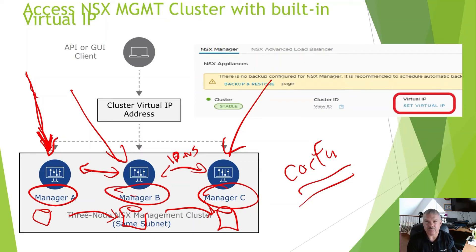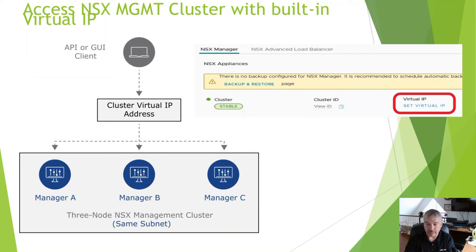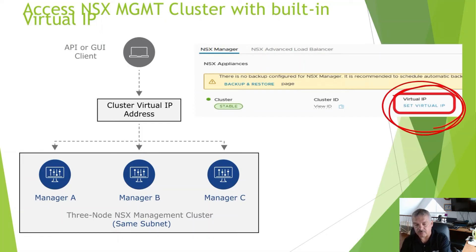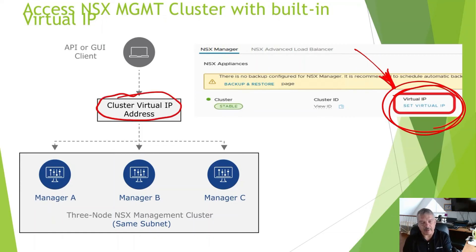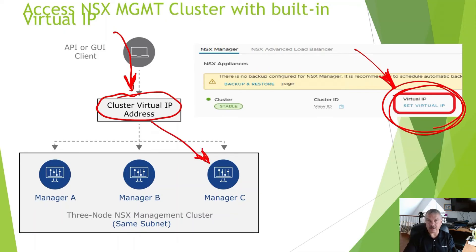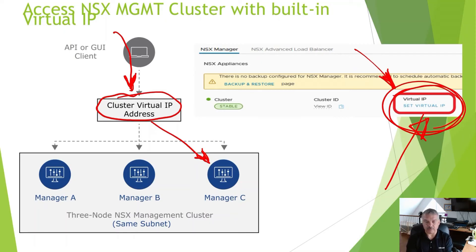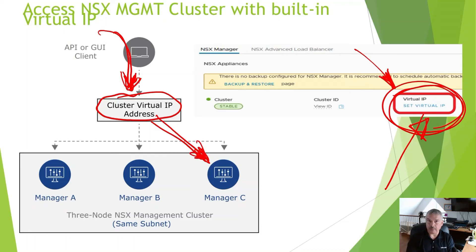That doesn't really help with scripts and API calls though. Built into NSX is the ability to set a virtual IP — you click that link, give it an IP, and now you have a cluster virtual IP that your GUI, API script, or web browser can connect to, and it will send you to one of the managers. Now, this is not load balancing. The virtual IP will be bound to one of these managers, and all requests going through this virtual IP will go to that one manager.